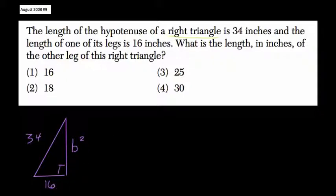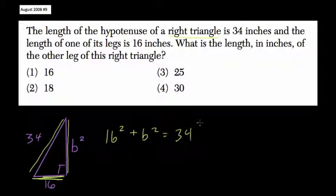And that means that one leg squared plus another leg squared equals the hypotenuse squared. So that means 16 squared plus b squared equals 34 squared. We're just plugging those legs in to our formula, a squared plus b squared equals c squared.